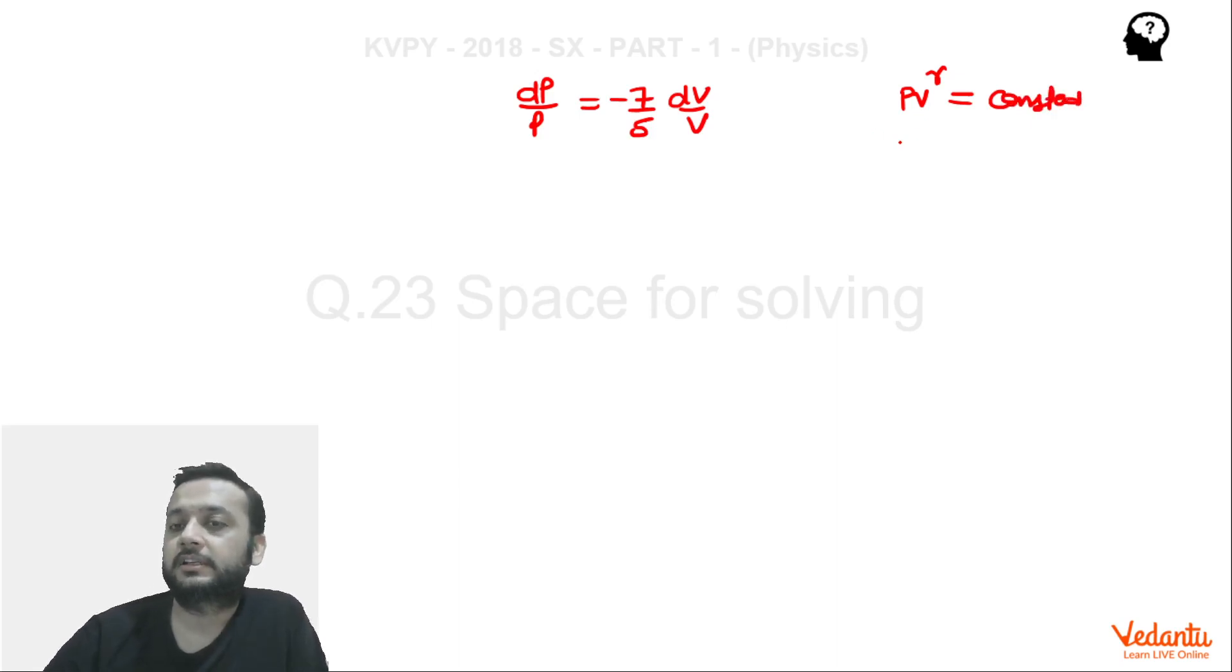If we know the adiabatic process equation is this type of equation, correct. So if you differentiate this, basically if you differentiate this, so dP/P plus gamma dV/V ki value zero, right.